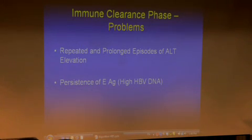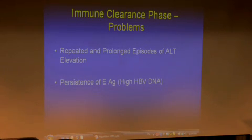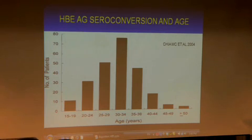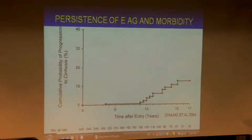The problems at this stage are that repeated episodes of ALT elevation and flares give rise to more liver damage. If the patient is e-antigen positive, persistently positive with high DNA levels after the usual age of 35, there are problems — it means they have failed to convert. Most patients seroconvert from e-antigen to anti-e up to age 35, at most 40. After age 40, only about 10% of remaining patients have persistent e-antigen positivity, and this 10% do not do well.